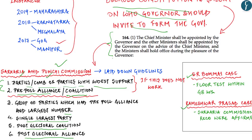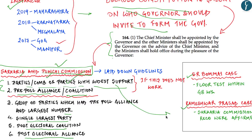The constitutional provisions under Articles 163 and 164 under Part 6 are extremely relevant. For the mains examination, the issue of discretionary powers of the governor — whether in appointment, imposition of President's Rule, or reservation of bills — is important. It's essential to quote instances of doubtful usage, mention constitutional provisions, and take the ideal path forward from the Sarkaria and Punchhi commissions reinstated in Rameshwar Prasad, while keeping the S.R. Bommai judgment in mind.